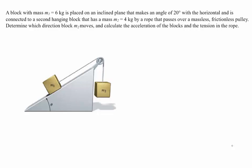We look at the weight of M1. M1 is 6 kg, so the force of gravity on M1 is 6 kg times 9.8 m/s², which gives 58.8 Newtons. Just like in other inclined plane problems, we choose axes parallel and perpendicular to the ramp, and break this weight into those two components — the component perpendicular to the ramp and the component parallel to the ramp.